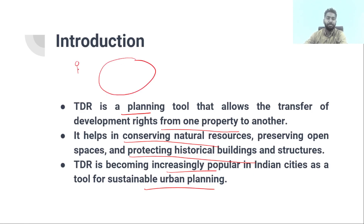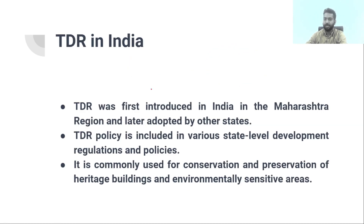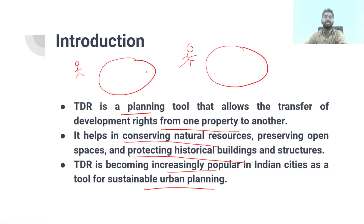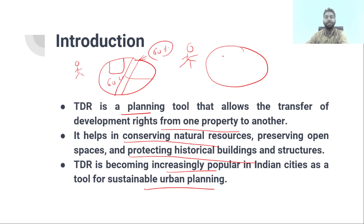To understand TDR, remember there are two people: Person No. 1 and Person No. 2. Person No. 1 has a multi-story structure and is allowed 60% land use. Person No. 2 is allowed 50% land use but has chosen to keep their area as open space, a park, or an environmentally friendly zone. According to the government, 60% of Person No. 2's place can be used for development.